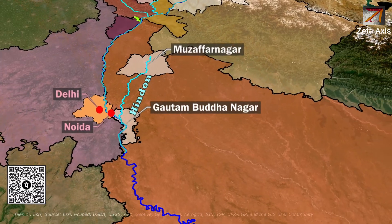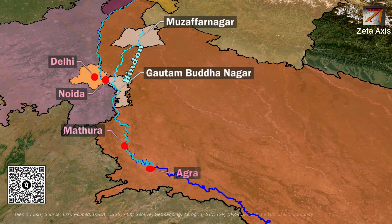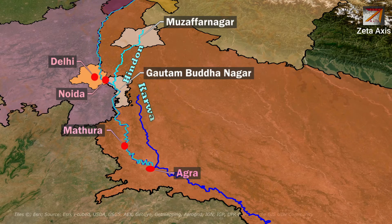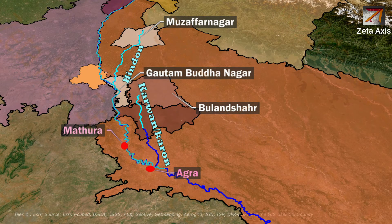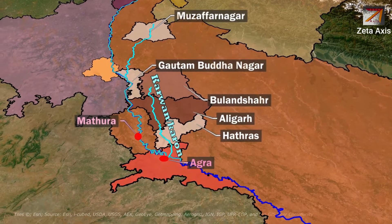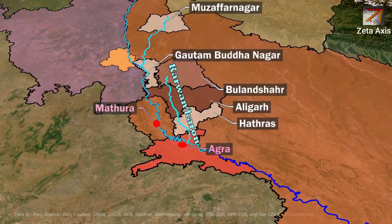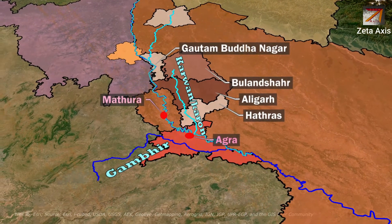The Yamuna river flows from Mathura and reaches Agra, where the Karwa or Karo river merges with Yamuna. The Karwa river originates from Bulandshahr and passes through Aligarh, Hathras, and finally merges with Yamuna in Agra. Within Agra, the Gambiri river also merges with Yamuna.